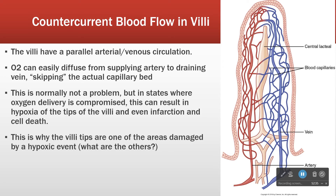Normally this isn't an issue because there's plenty of blood flow to the gut — massive collaterals, great vasodilators. But if you have a situation where your oxygen delivery is compromised, say you've had an MI, you have an arrhythmia, and a code blue is being called — at that point you're not delivering very much oxygen to your cells. Because of this arrangement, it makes the intestinal villi a very common site of ischemia and death during periods of hypoxia.